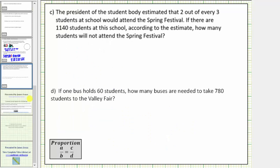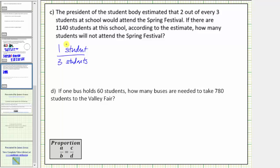For part C, the president of the student body estimated that two out of every three students at school would attend the spring festival. If there are one thousand one hundred forty students at this school, how many students will not attend the spring festival? The ratio of two to three gives us the ratio of students attending to the total students, and therefore the ratio of one to three gives us the ratio of students not attending to the total number of students. We need to be careful about the wording here because the estimate is about how many students will not attend. So the ratio of one student to three students is the ratio of students not attending to the total number of students.